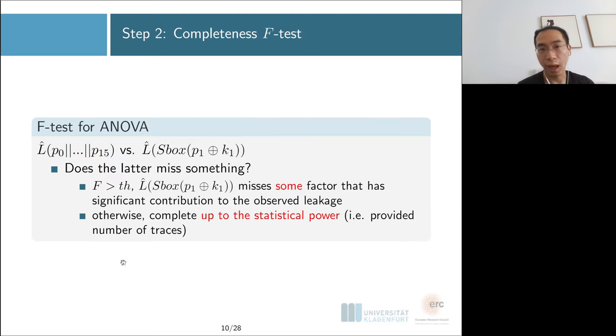The second step involves how to compare two models. We're going to compare the full model with the model we believe is correct. Fortunately, we have well-established techniques in statistics called the F-test for the analysis of variance. If the F statistic is larger than some threshold, we say the latter model is missing some factors. Otherwise, we say it's complete up to the statistical power defined by your provided number of traces.